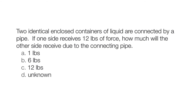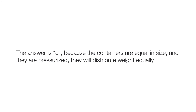One more practice problem. Two identical enclosed containers of liquid are connected by a pipe. If one side receives 12 pounds of force, how much will the other side receive due to the connecting pipe? A. One pound. B. Six pounds. C. Twelve pounds. D. Unknown. The answer is C because the containers are equal in size and are pressurized, so therefore they will distribute weight equally.